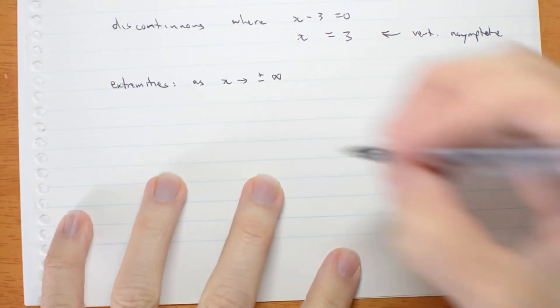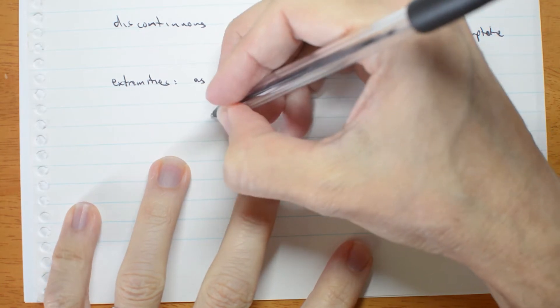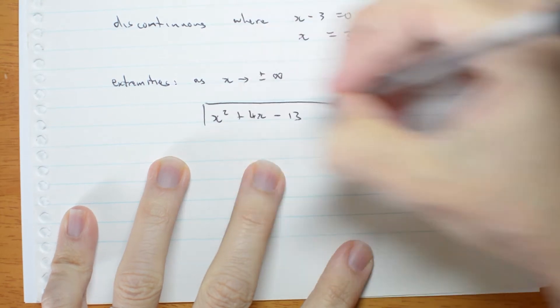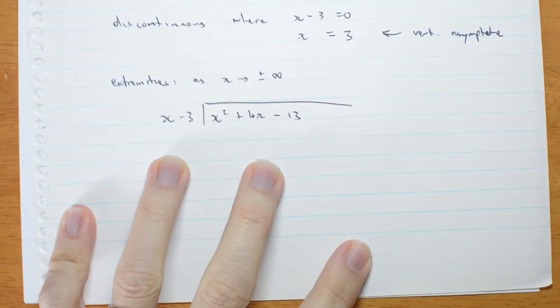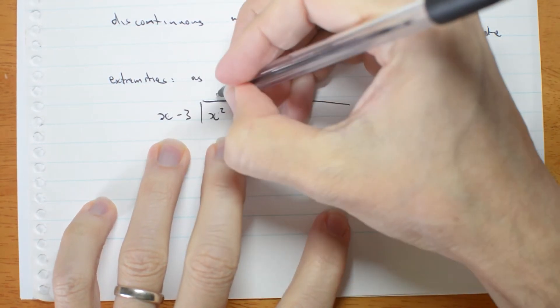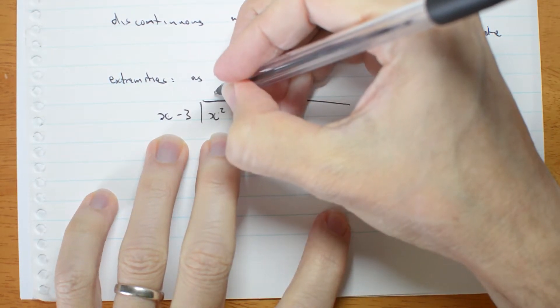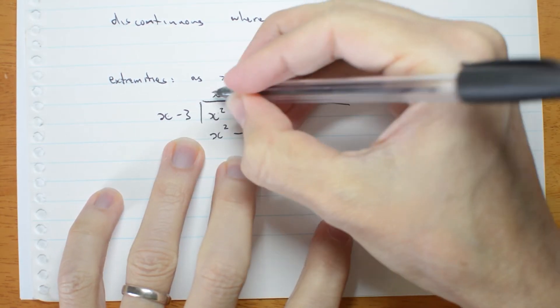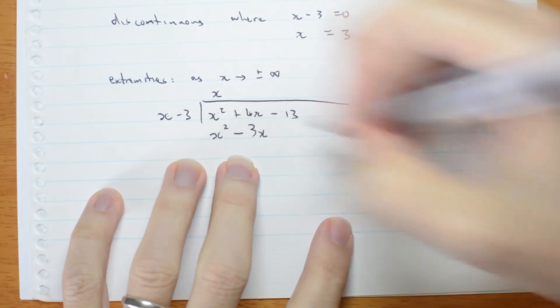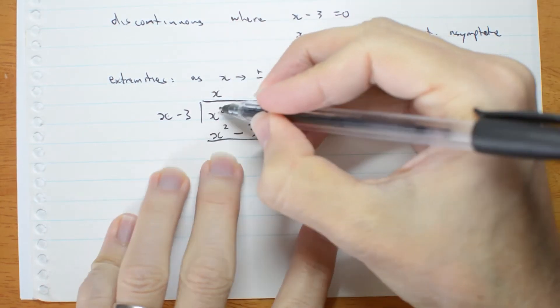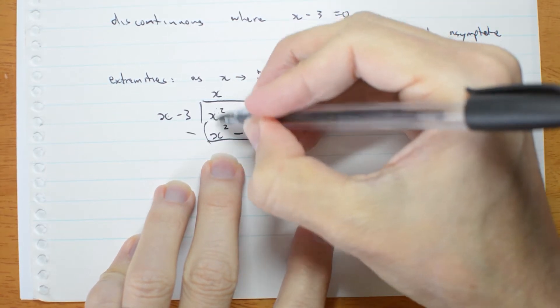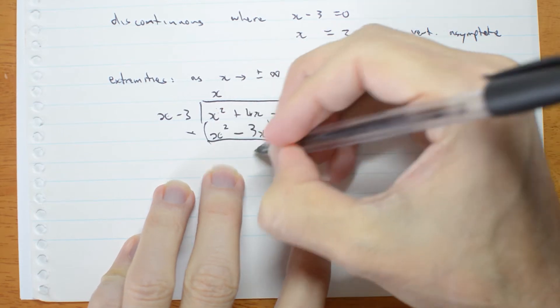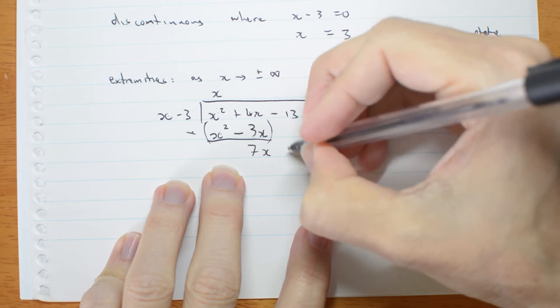I have to divide x squared plus 4x minus 13 by x minus 3. x goes into x squared x times, x times x is x squared, minus x times 3 is 3x. Subtract. x squared take x squared is nothing, it's what I wanted. 4 minus negative 3 is 4 plus 3 is 7x. Bring down the minus 13.